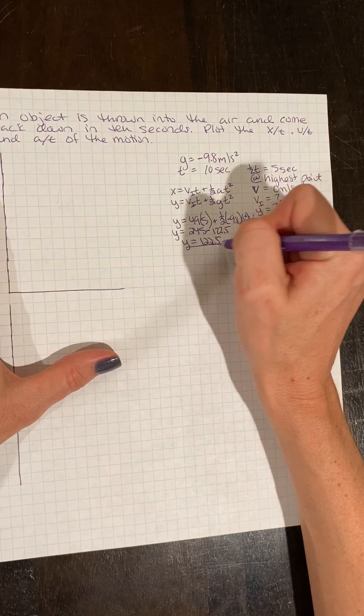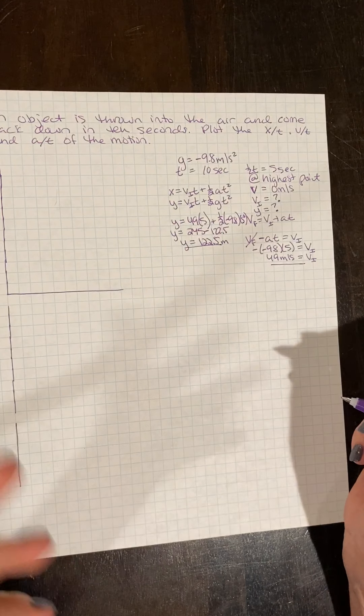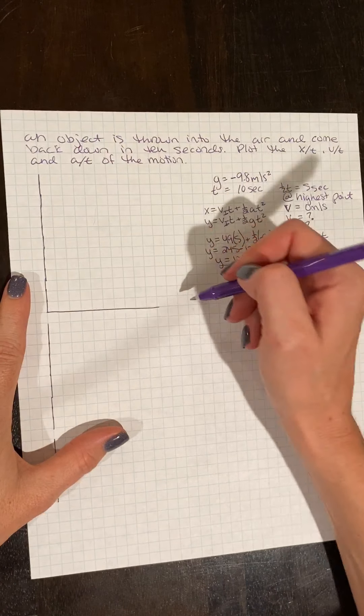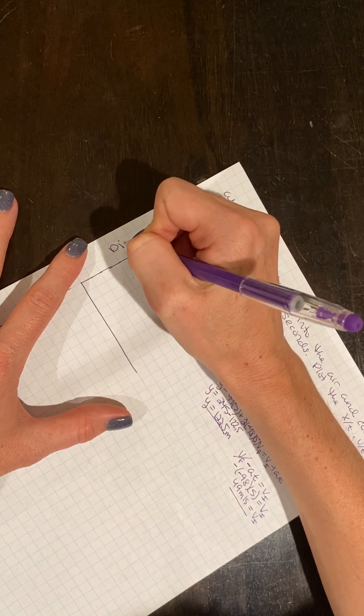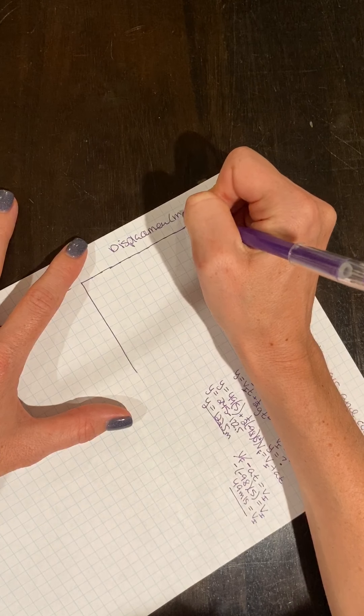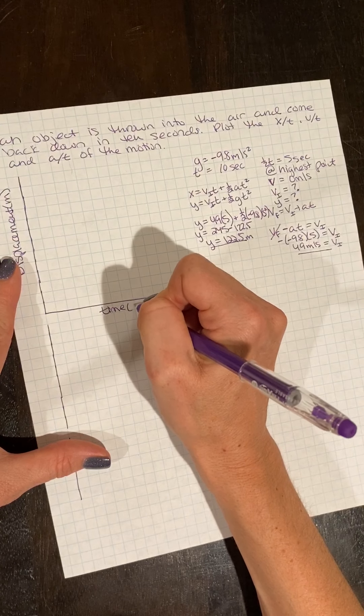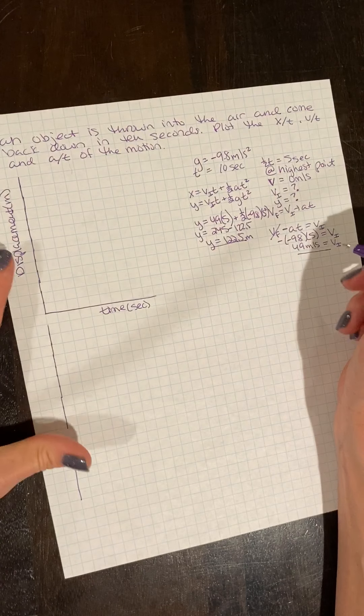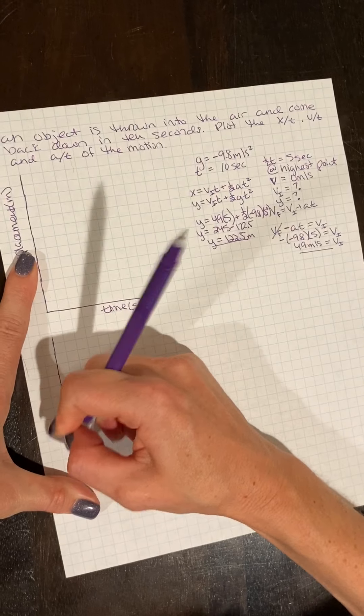So this is my max displacement. This is my initial velocity. So we have some parameters for how we're setting up our graphs. So I drew our graph here. This is going to be our position for our displacement in meters, time in seconds. I'll give myself a little bit more room here.